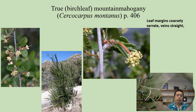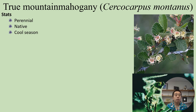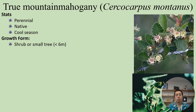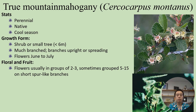Cercocarpus montanus is a perennial native species and also a cool-season plant. It often grows as a shrub or small tree less than six meters tall, with many branches that are often upright or spreading. It typically flowers in June to July. Flowers are usually grouped in clusters of two to three, but sometimes five to fifteen on short spur-like branches. The styles are often persistent even after pollination and can be plumose.